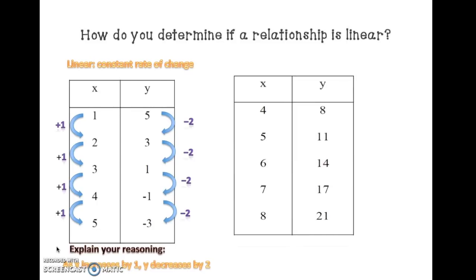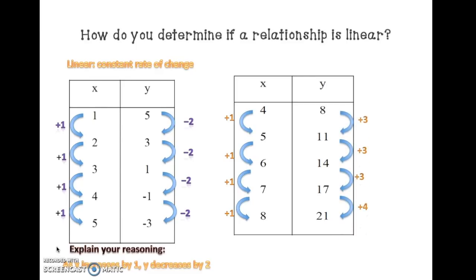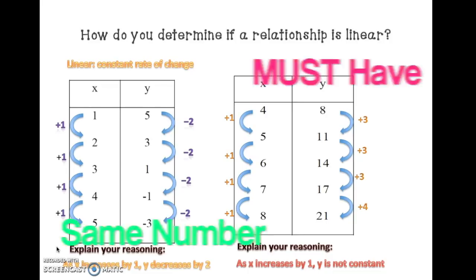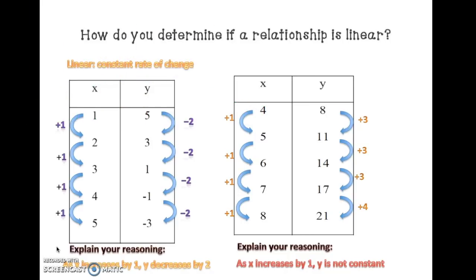Let's take a look at the second table. The x values are 4, 5, 6, 7, and 8 — x is increasing by 1. The y values are 8, 11, 14, 17, and 21. From 8 to 11 is increasing by 3, 11 to 14 by 3, 14 to 17 by 3, but 17 to 21 is increasing by 4. So the x value is increasing by 1, but the y value is not constant — it's not a constant rate of change. In order for it to be linear, x and y must increase or decrease at a constant rate of change. So we can say it's non-linear.